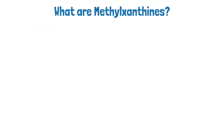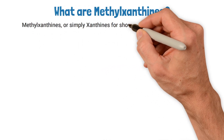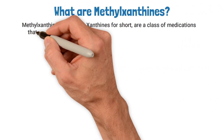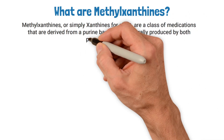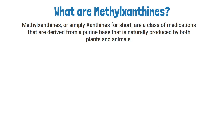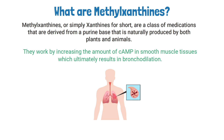Methylxanthines, or simply xanthines for short, are a class of medications derived from a purine base that is naturally produced in both plants and animals. They work by increasing the amount of cyclic AMP in smooth muscle tissues, which ultimately results in bronchodilation. This is why they can be used for the treatment of reversible obstructive diseases such as asthma, chronic bronchitis, and emphysema.